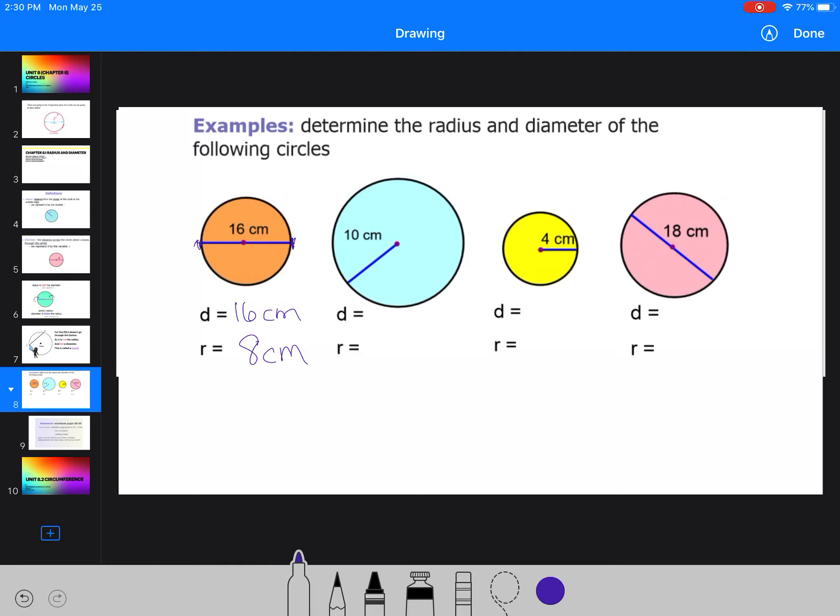The diameter, well, we don't have that yet. But we have the radius, because it starts at the center, and it goes to the edge. So the radius is actually 10 centimeters. Now, if the radius is double to get the diameter, that means the radius, I multiply it by two.